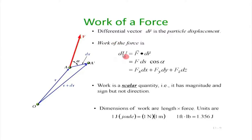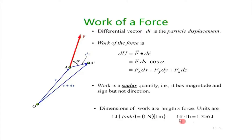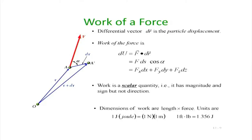Let us discuss what is the concept of work of a force. We have a particle; we move it from point A to A-prime. The work of a force is nothing but F·dr, where F is the force and dr is the displacement. Work is a scalar quantity — it has magnitude but not direction. The dimension of work is joules. One joule is a 1-Newton force creating a displacement of 1 meter.